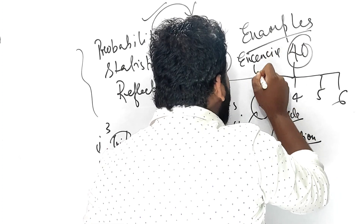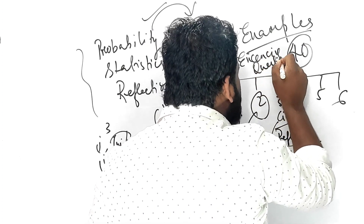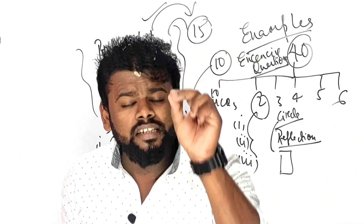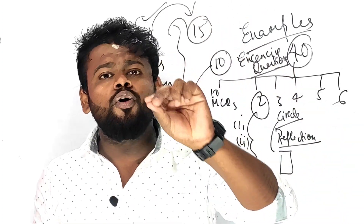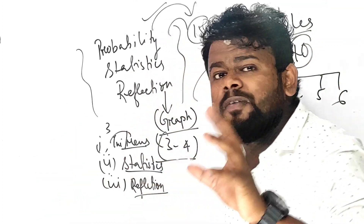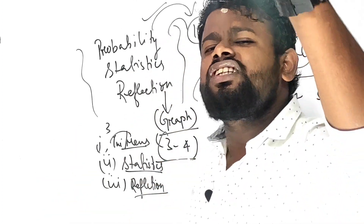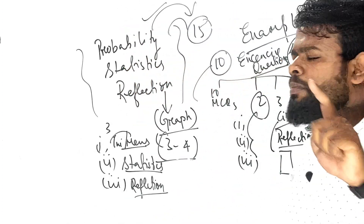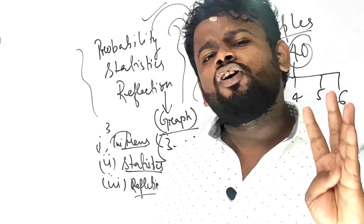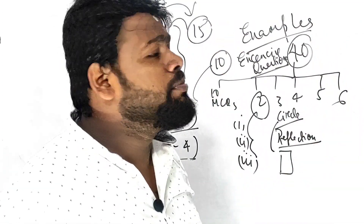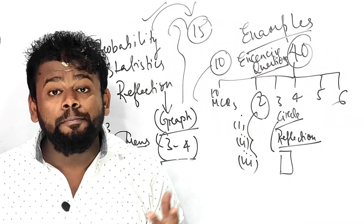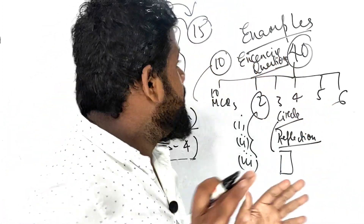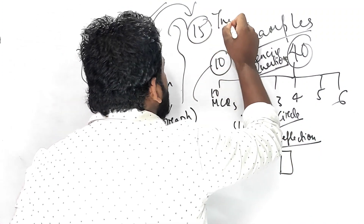Coming to Reflection — it is a chapter you have to give a lot of time to, especially the graphical part. If you can do the graph perfectly, five marks are guaranteed: one mark from MCQ and four marks from the graph question. That puts it inside the pocket. Not only that, in the case of Midpoint — the Midpoint and Section Formula — the Trisection part is very very important.